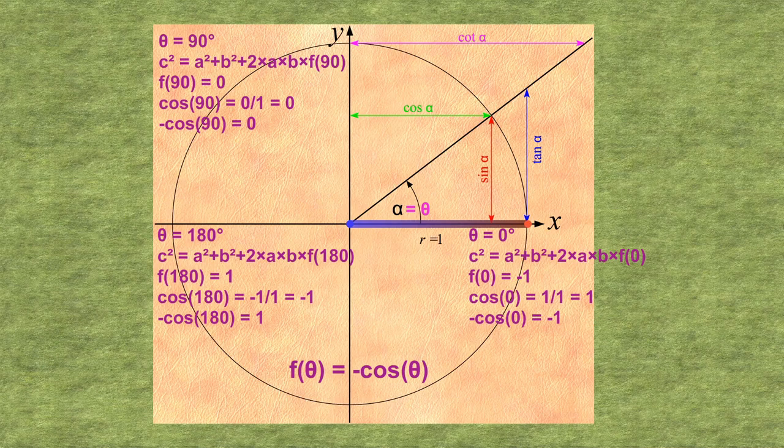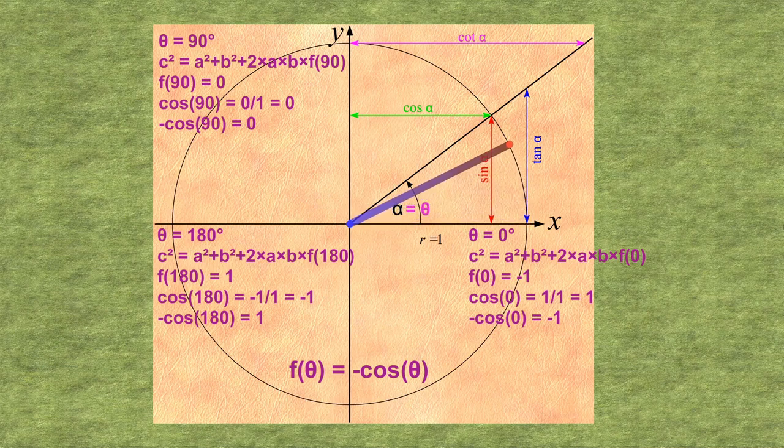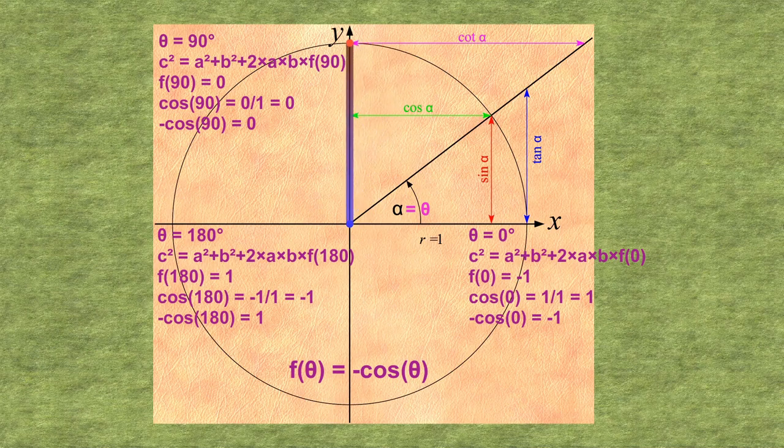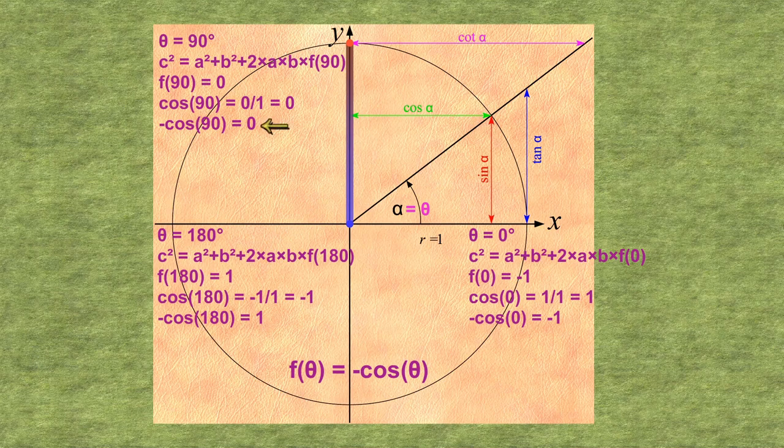Let's check it for the 90 degree case. Now, x equals 0, since we're at y equals 1, but we've moved all the way back to 0 on the x axis. So, x over r equals 0, and minus cosine still gives 0, as we require.